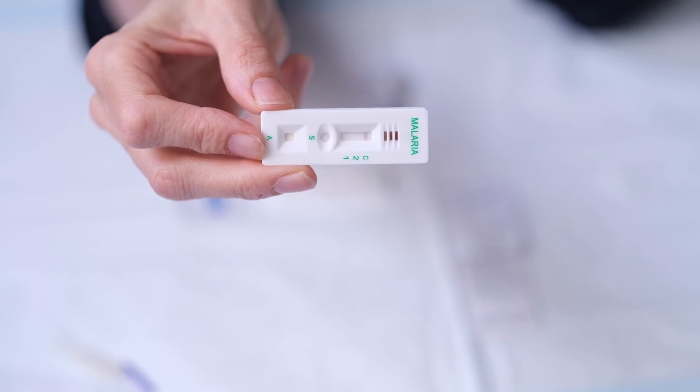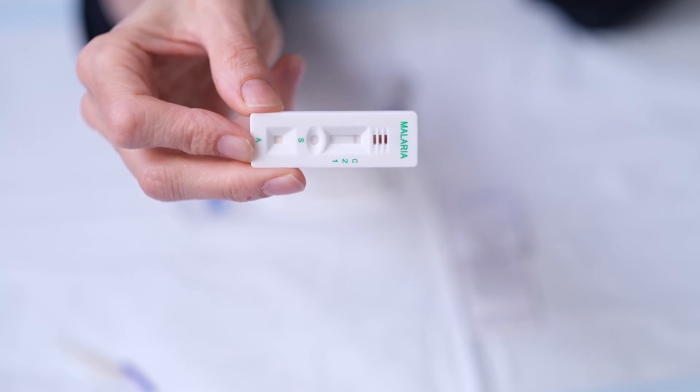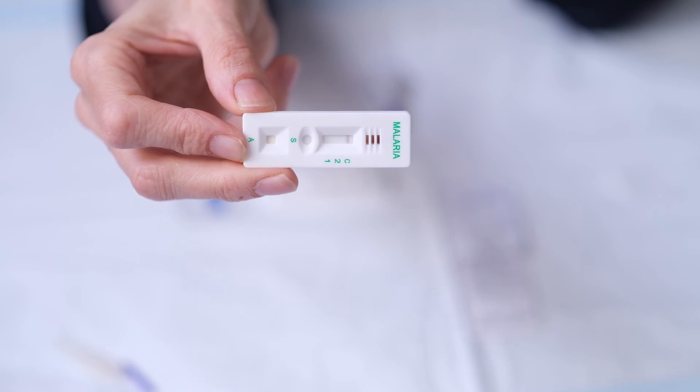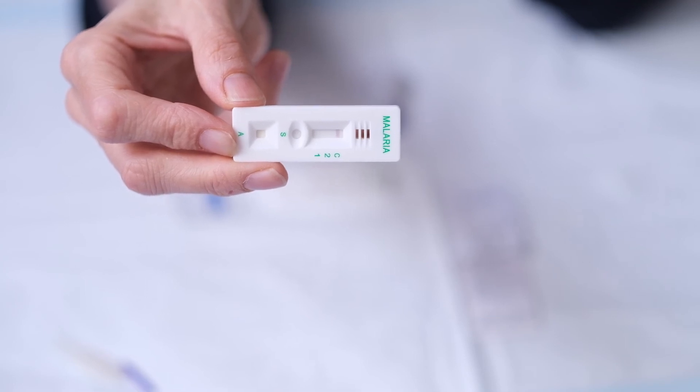The test takes 20 minutes to run through and get a result. Here is a cassette that we did earlier. You can see there is a purple line next to the C. That's the control bar means the test is successful and there are no bars next to the 1 and the 2 which means that you don't have malaria which is very reassuring.